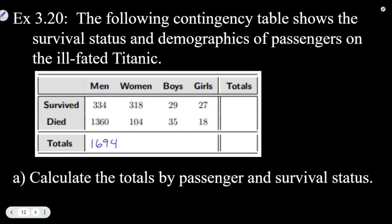Then we have 318 plus 104, and that is 422. Then we have 29 plus 35, that's going to be 64, and this one's going to be 45.